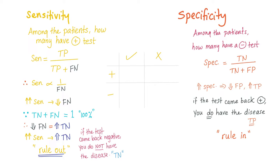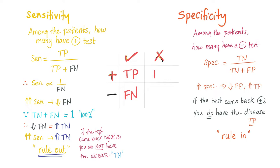Let's go back to the two-by-two table: Disease / No Disease, and Positive Test / Negative Test. If the patient has the disease and tested positive, this is a true positive. If the patient has the disease but tested negative, this is a false negative — false because the patient already has the disease. If the patient has no disease but tested positive, this is a false positive. No disease and tested negative — this is a true negative.